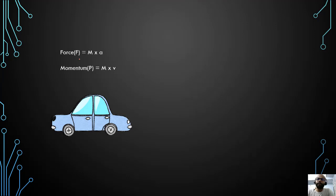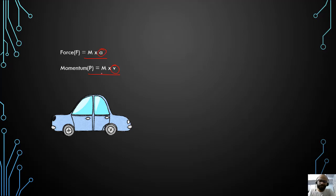Until now, whenever you were writing the formula of force, you were saying F equals MA. And momentum was P equals MV. But what are A and V here? It's very easy — you will say A is acceleration of the body and V is velocity of the body.